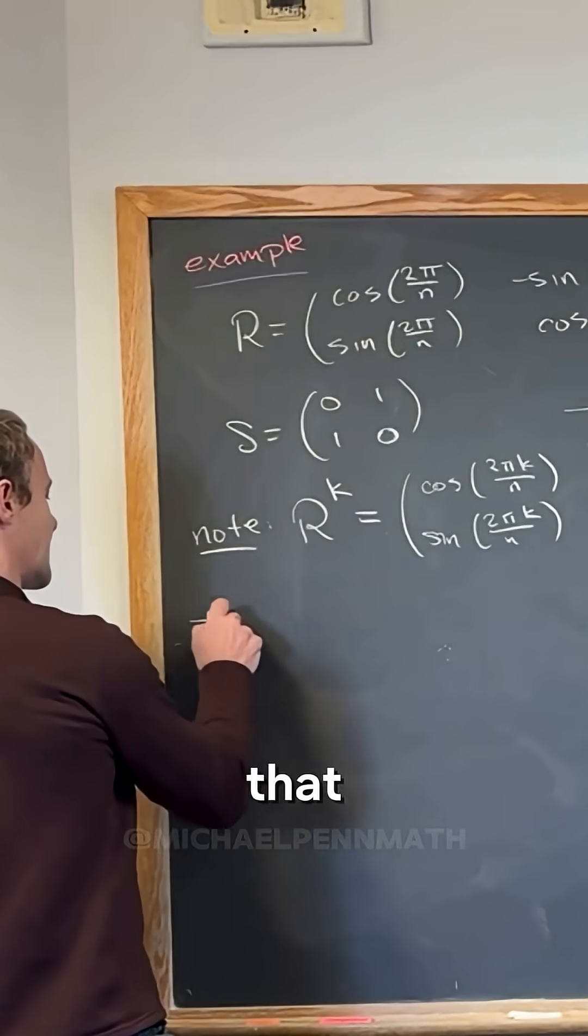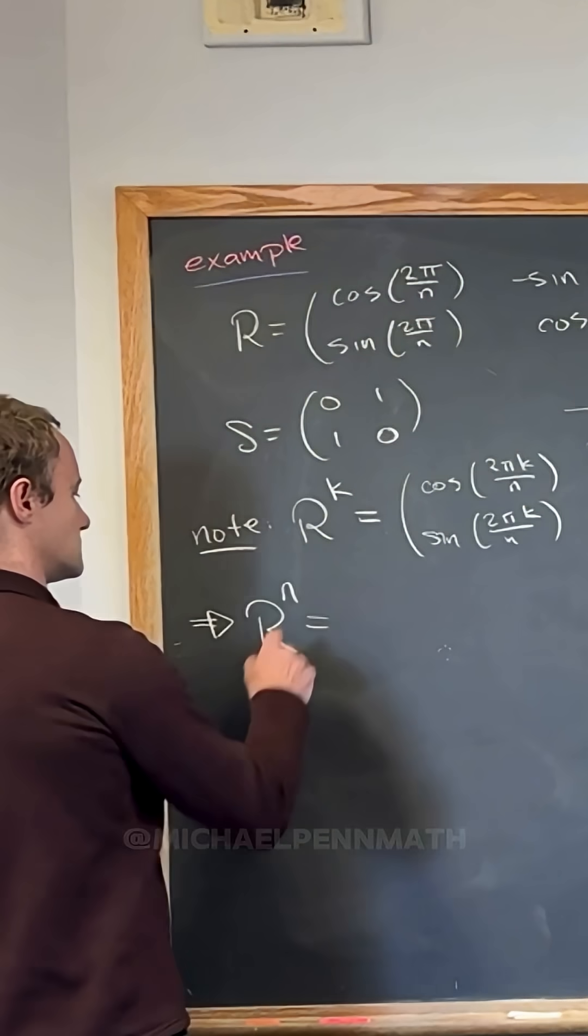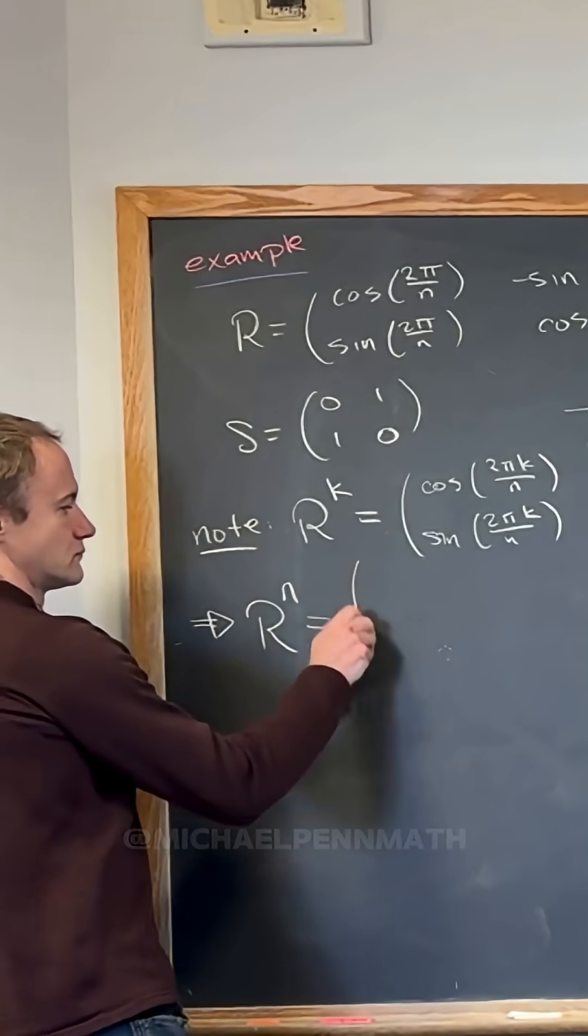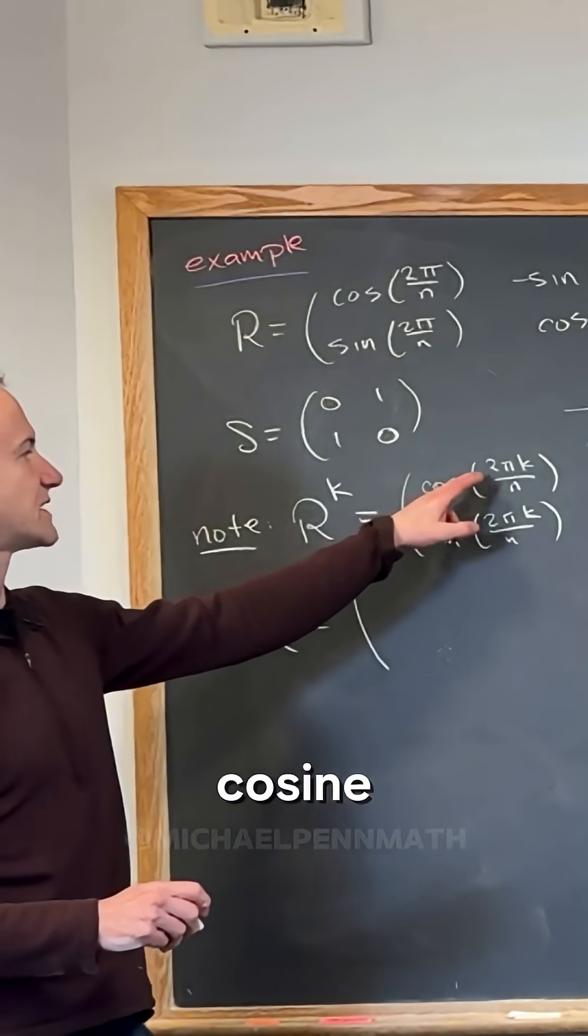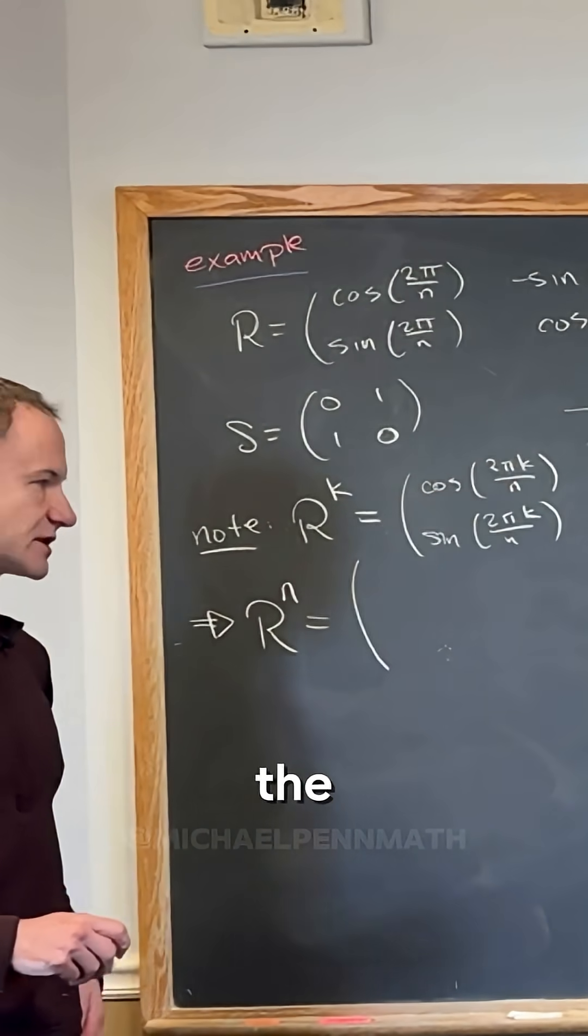But then if R to the k is that in general, tell me what R to the n is. Well, it's going to be the cosine of 2πn over n, aka the cosine of 2π. What's the cosine of 2π? One.